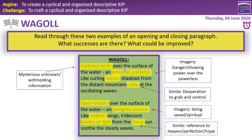Moving to the closing part of this, we've got: 'Dawn breaks over the surface of the water, an almighty saviour.' So the imagery here is almost like being saved — it's spiritual, like angelic wings. 'Iridescent beams of light from the rising sun soothe the steady waves.' So we've got this simile, references to heaven, perfection, and hope. We've got a clear link from the closing to the opening paragraphs.